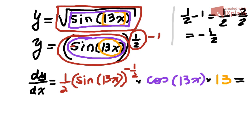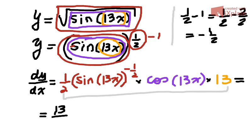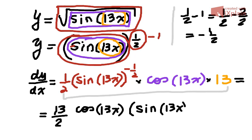This is our answer, but we need to rewrite it in a simpler way. Always look for numbers to multiply together since it's all multiplication. We get 13 halves, which we can leave as a fraction. Then I'll write cosine of 13x at the front, followed by sine of 13x to the negative one half. So this could be our answer.